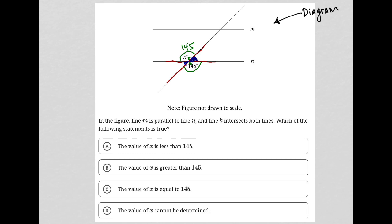The question goes on to say, in the figure, line m is parallel to line n. Okay, so I'm going to just draw a little parallel symbols. And line k intersects both lines. So this is line k.